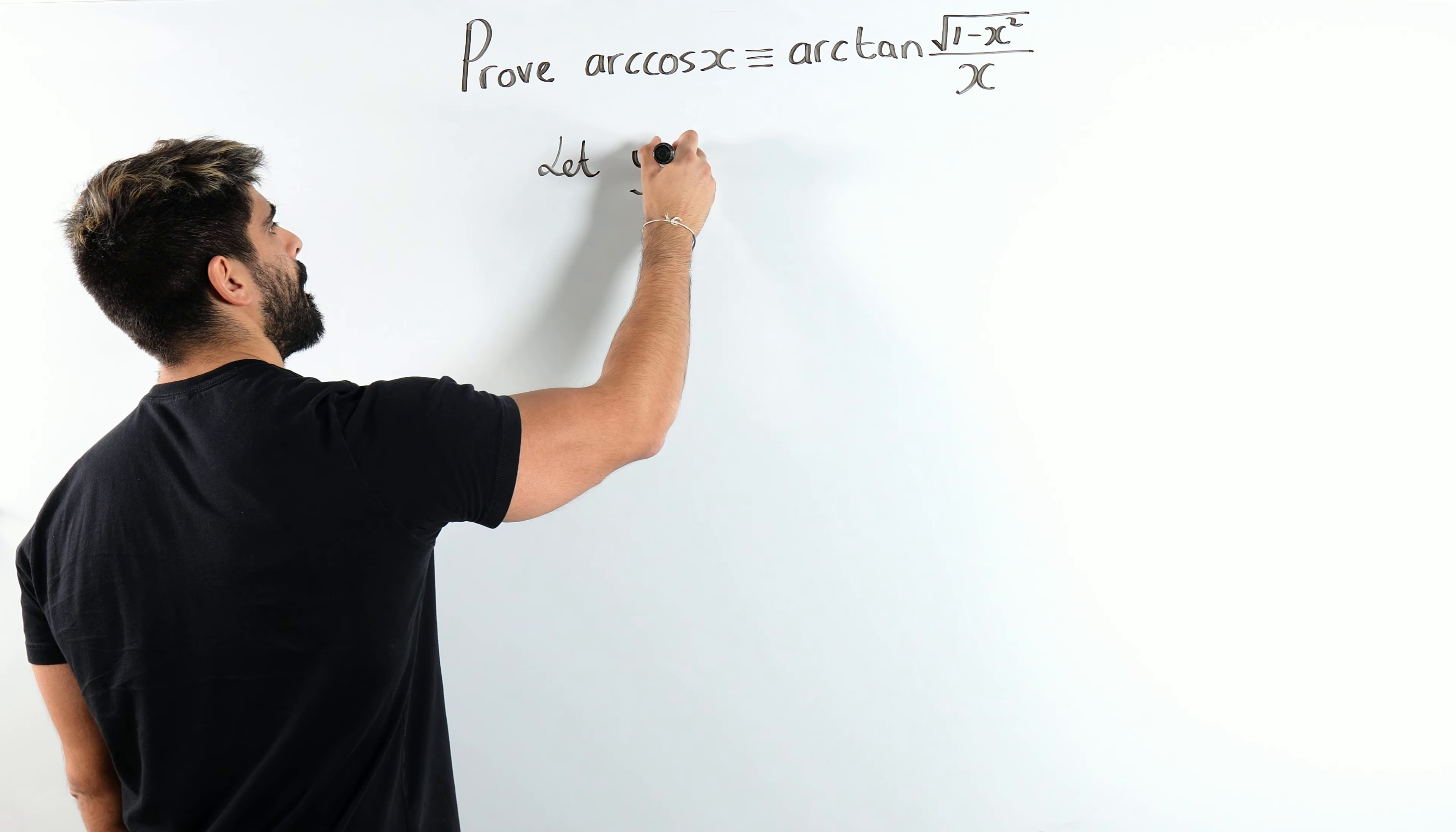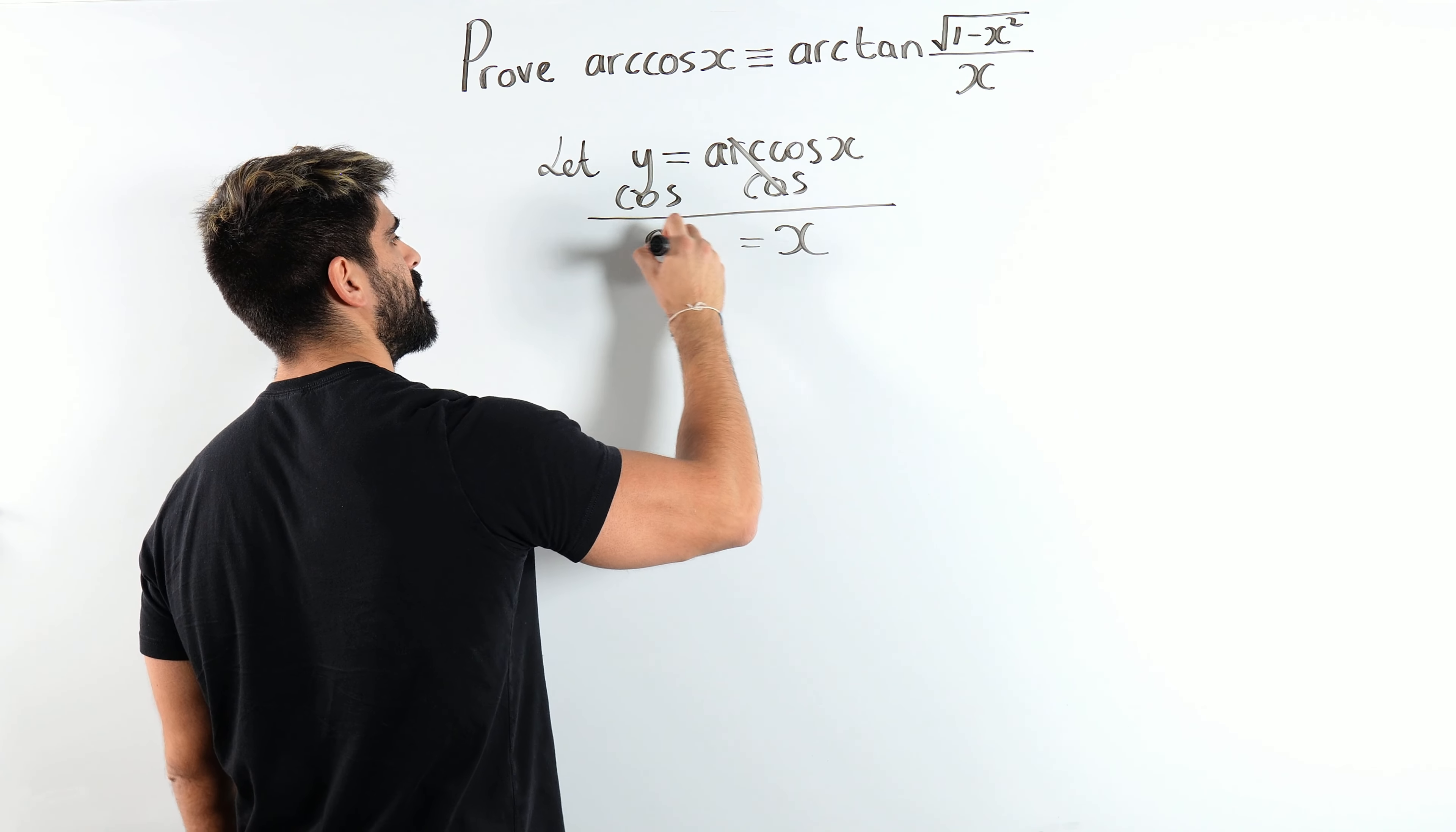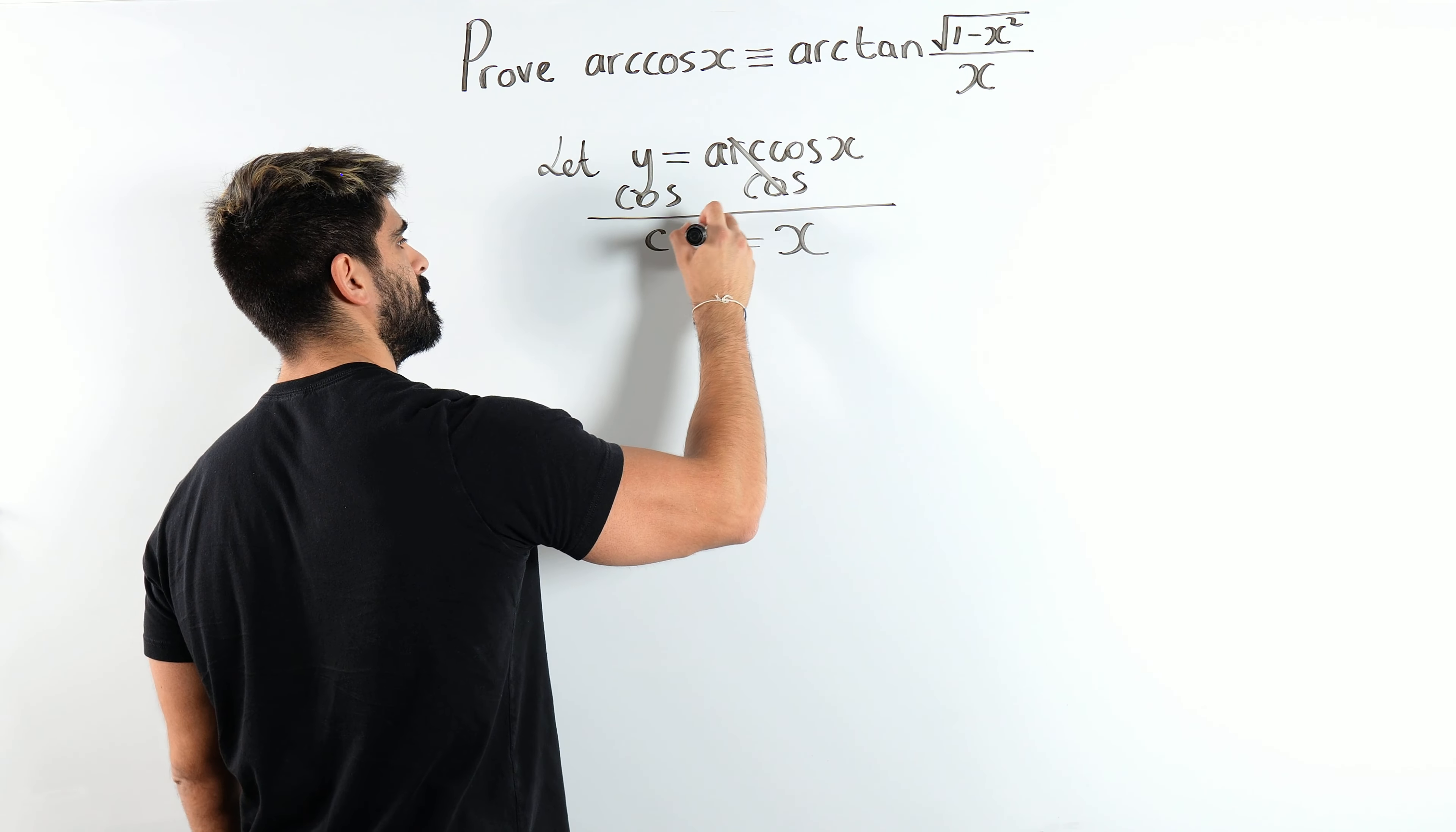Cos is the inverse of inverse cos. So I'm going to cos both sides. Alright, so this cancels. We're left with x is cos y.